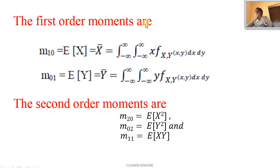The first order moments are m₁₀, where n equal to 1 and k equal to 0. Therefore that is equal to expectation of x. So expectation of x can be represented as x-bar, equal to the integral of f(x, y) dx dy.